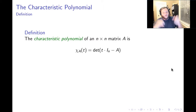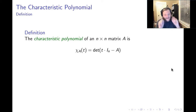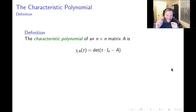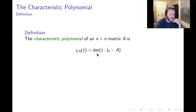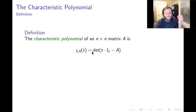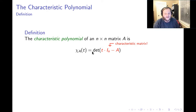Remember the notion of the characteristic matrix. The characteristic matrix of a square matrix is T times the identity minus the matrix. The characteristic polynomial is the determinant of T times the identity minus the matrix — that is, the determinant of the characteristic matrix.